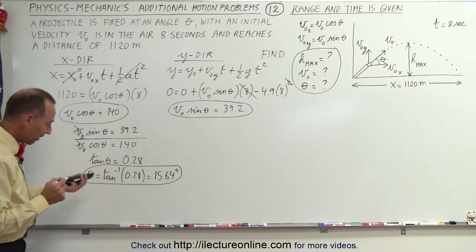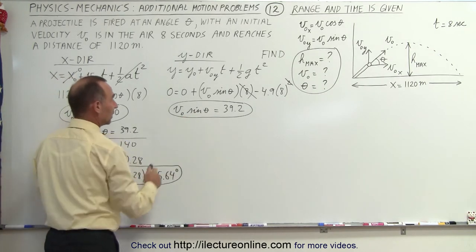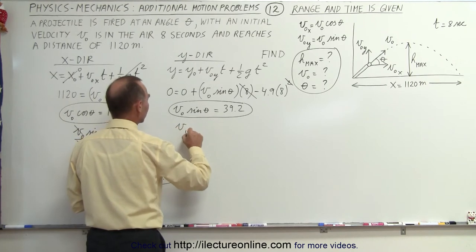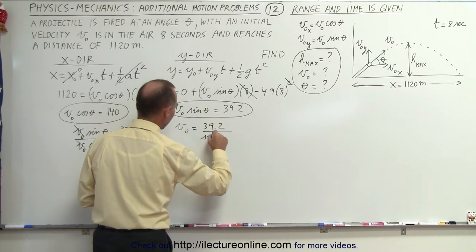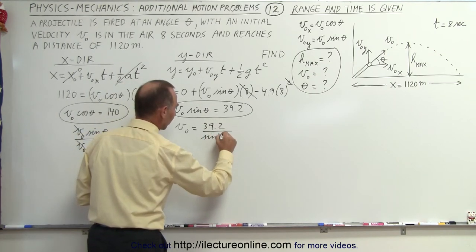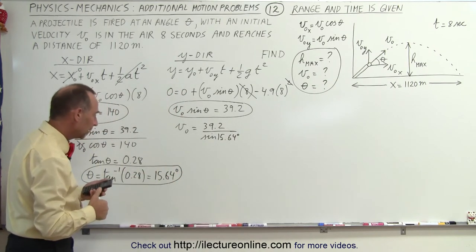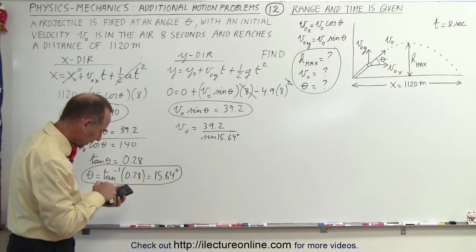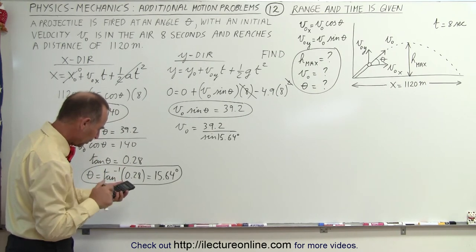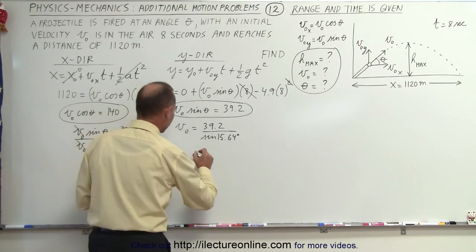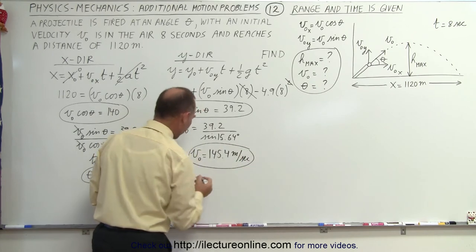Next, we need to find the initial velocity. Now that's easy to do because once we have the angle, we just plug that in. So v initial is going to equal 39.2 divided by the sine of 15.64 degrees. So take the sine of that, take the inverse, and multiply that times 39.2, and we get 145.4 meters per second. So now we also have the initial velocity.